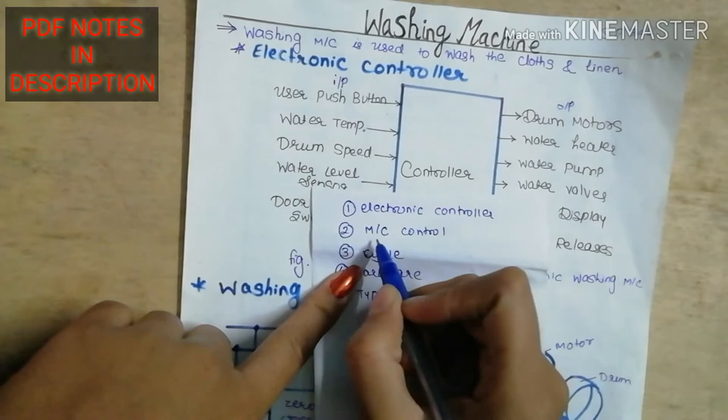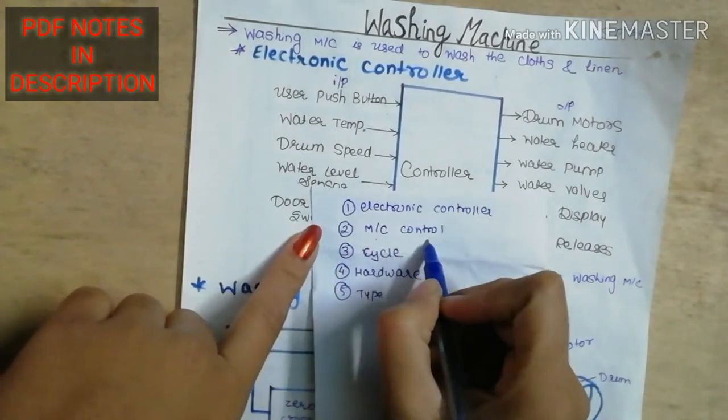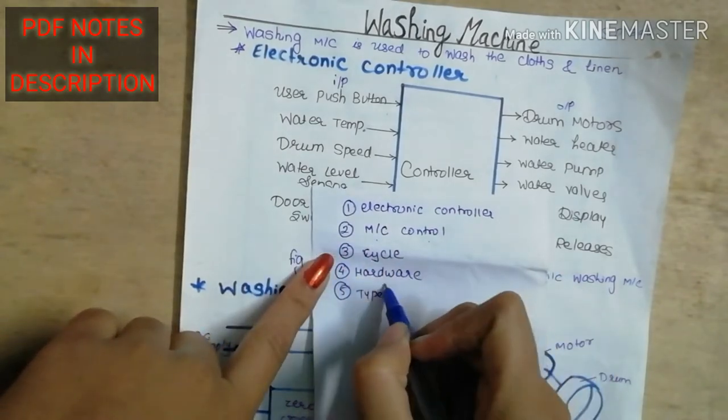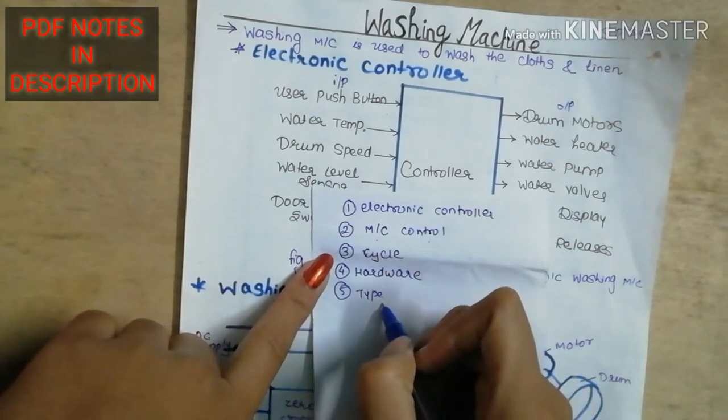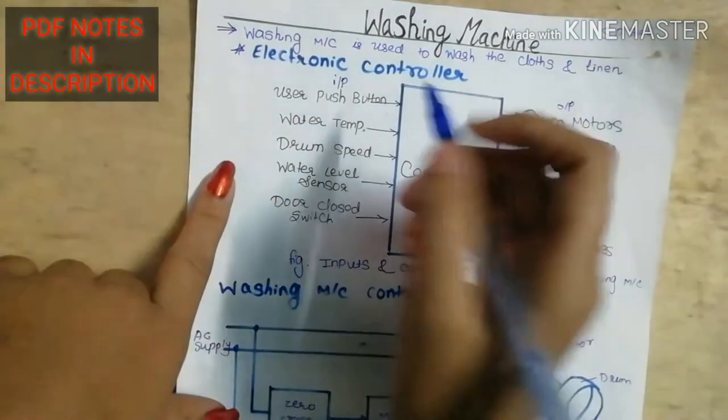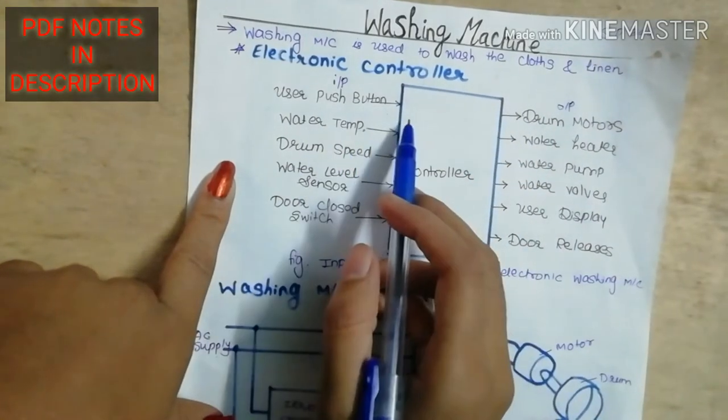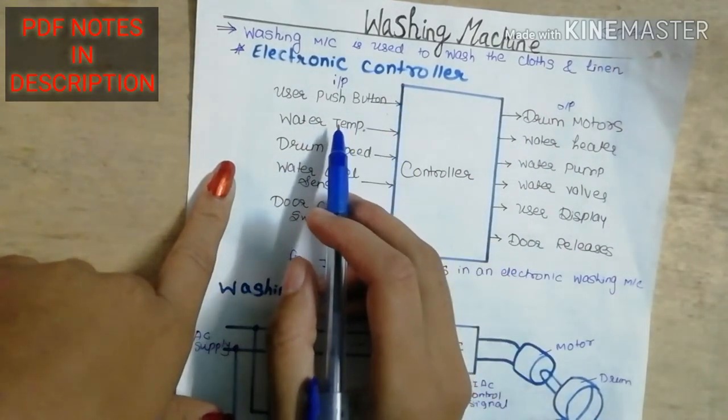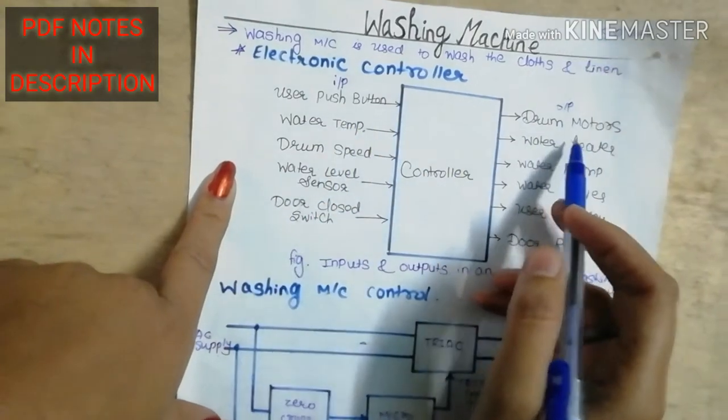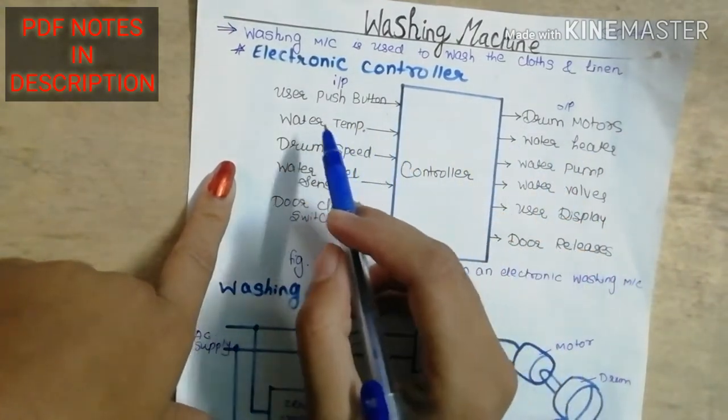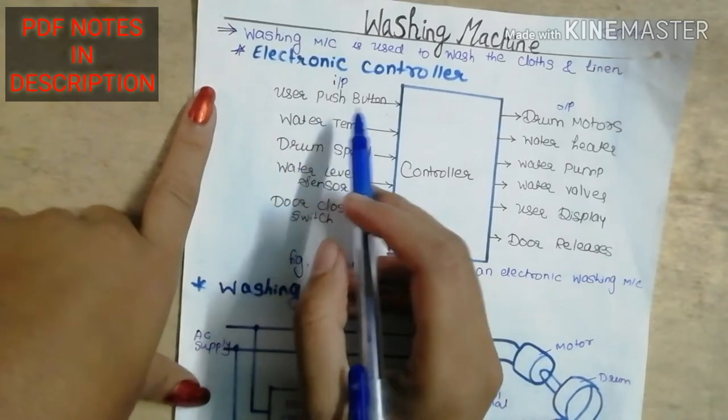We'll cover electronic controller, machine control, washing machine cycle, hardware and types. The washing machine is used to wash clothes and linen. The electronic controller uses input and output, and the most important thing is the user button.